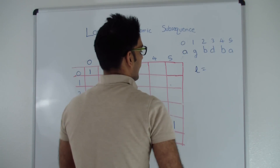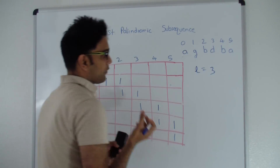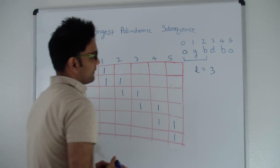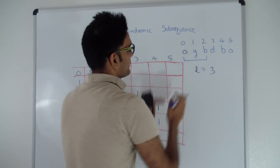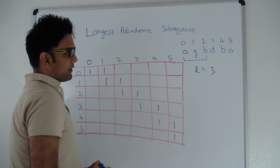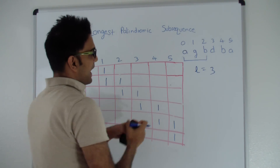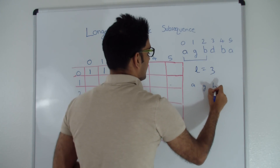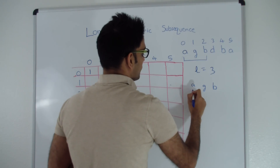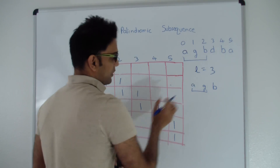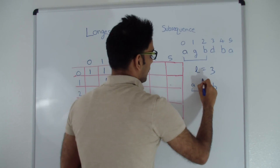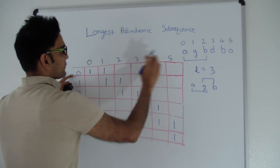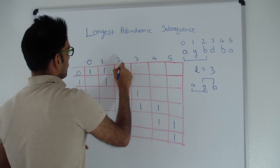Now L equals 3, considering 3 characters at a time. For A, G, B — since A is not the same as B — the longest palindromic subsequence will be the max of the two sub-problems: cell 0,1 or cell 1,2. Both of them are 1, so cell 0,2 is 1.